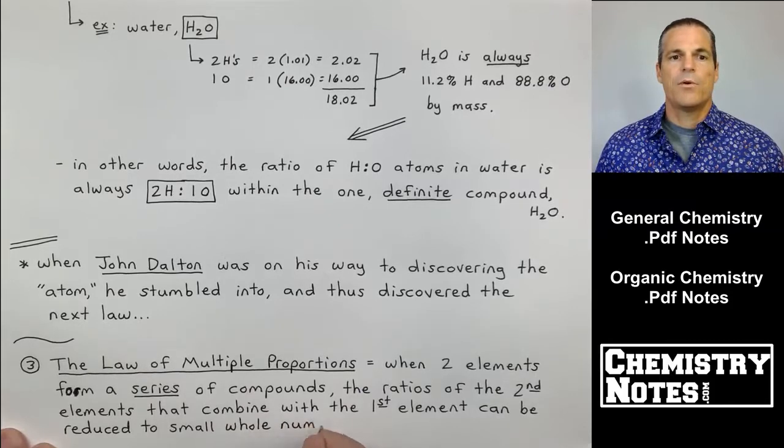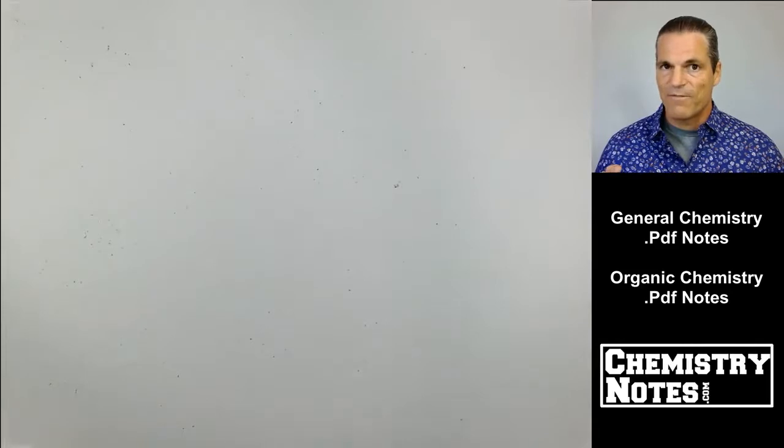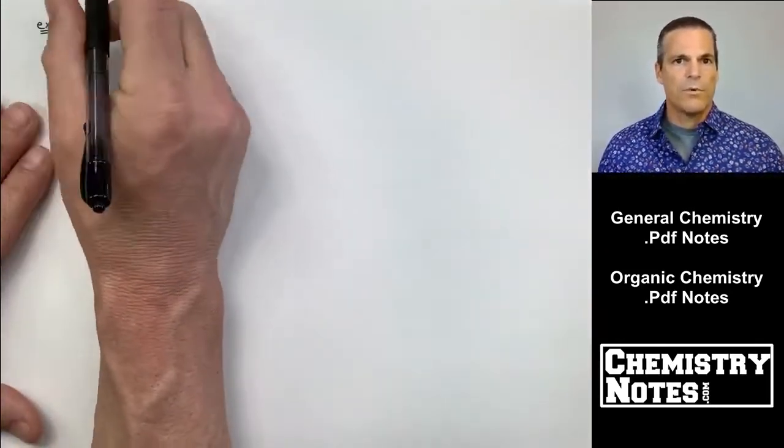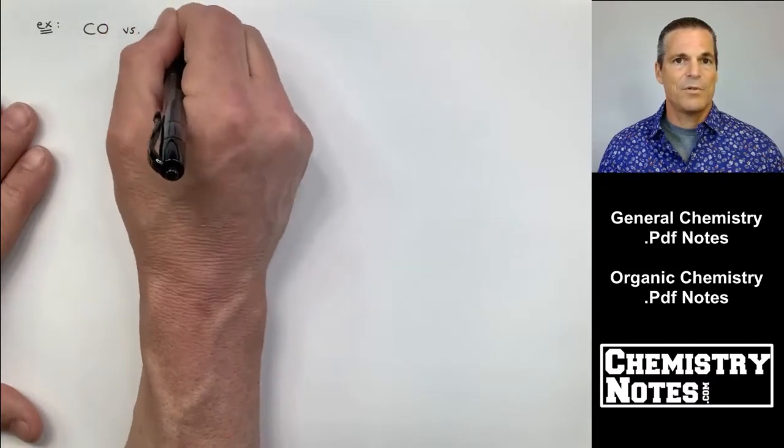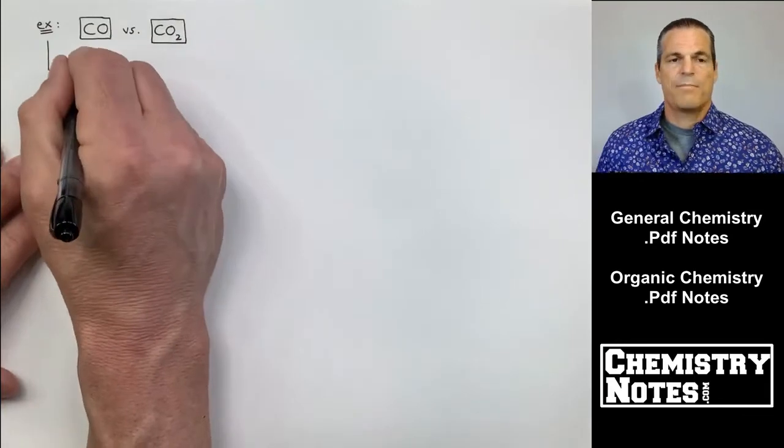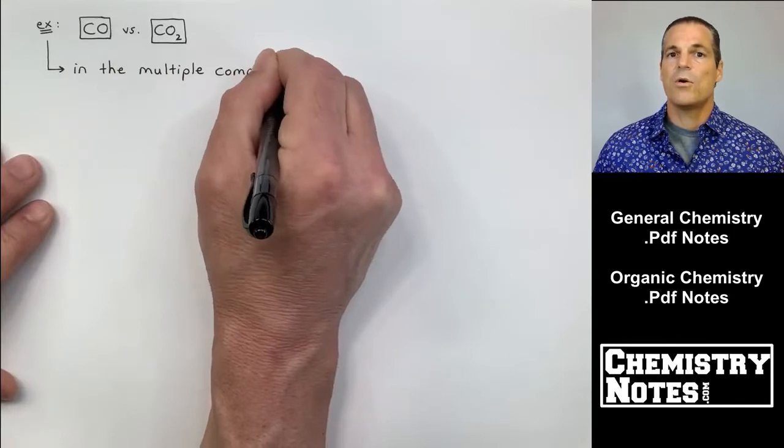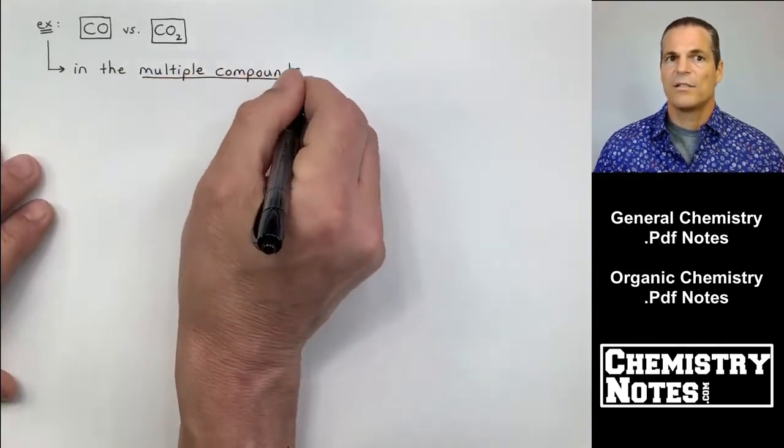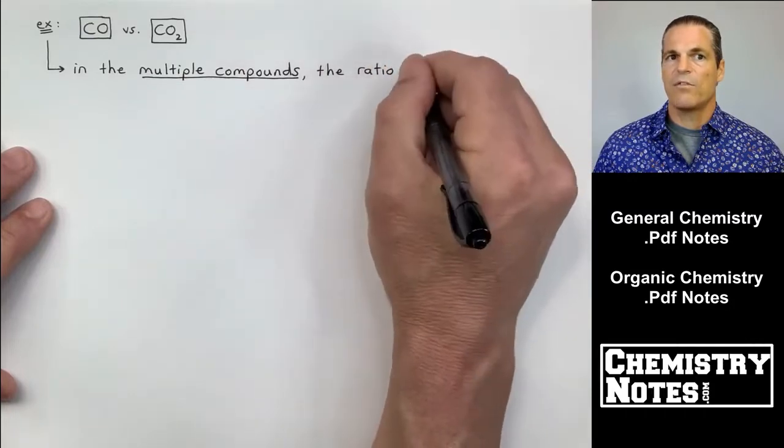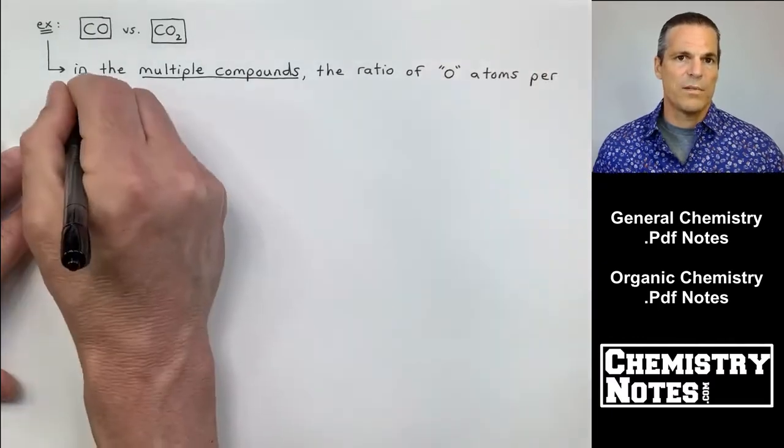second elements that combine with the first element in the compound, they can be reduced to small whole number ratios. Let me read that from the top. When two elements form a series of compounds, the ratios of the second elements that combine with the first element can be reduced to small whole number ratios. Here is an example using how many compounds? Two, but let's refer to them as multiple compounds. Look at the oxygens. We're taking a look at the second element. The ratio of oxygens is two to one.